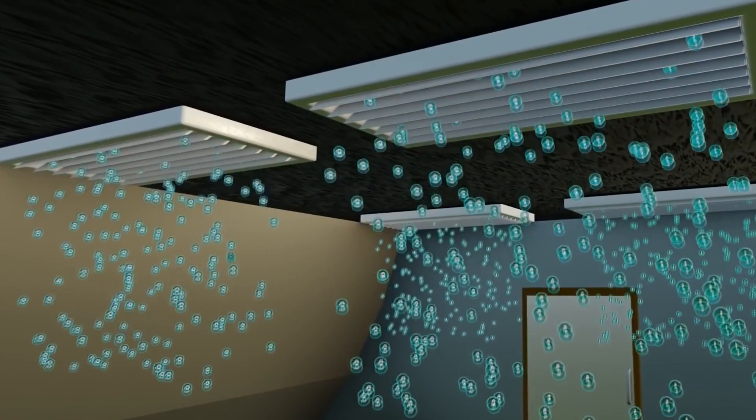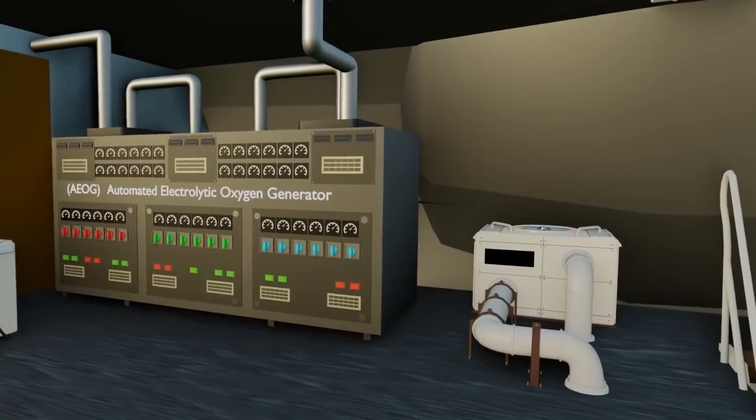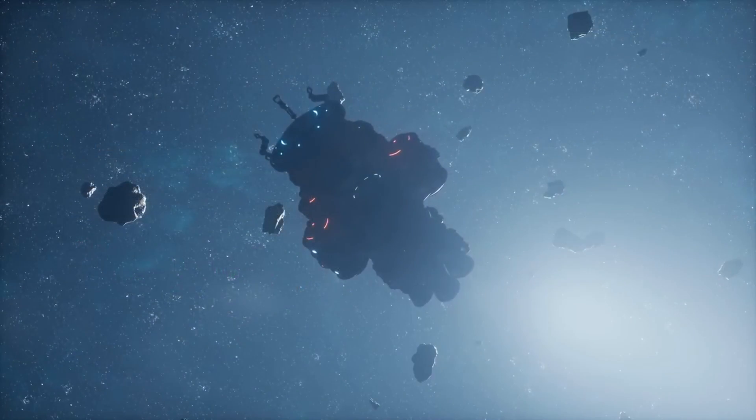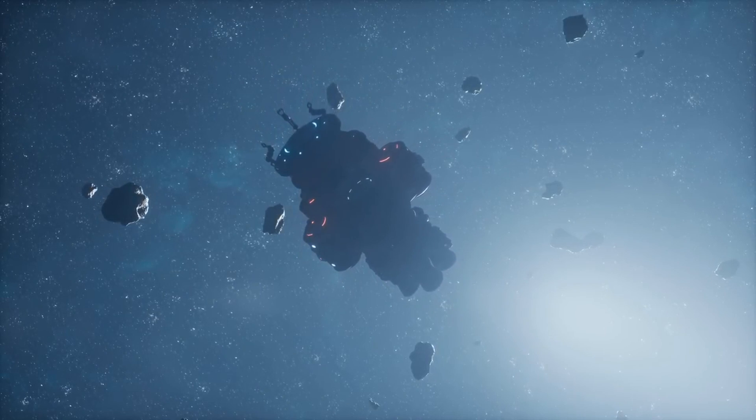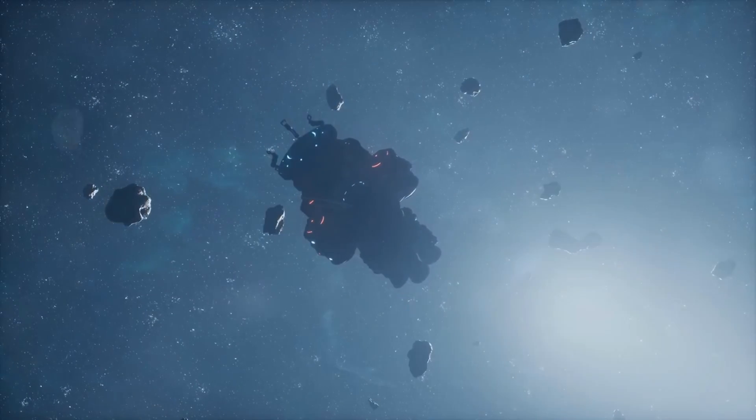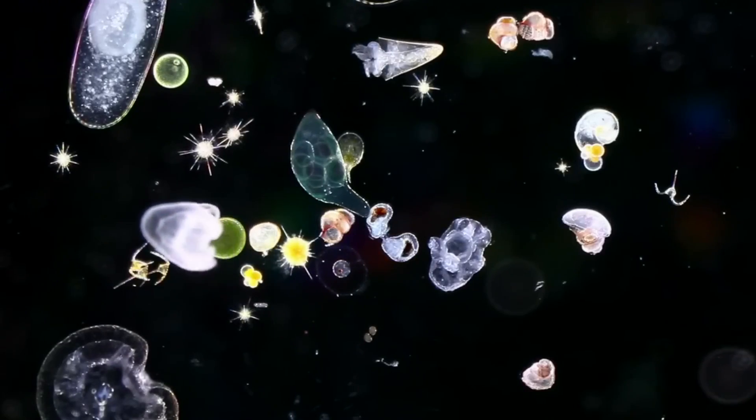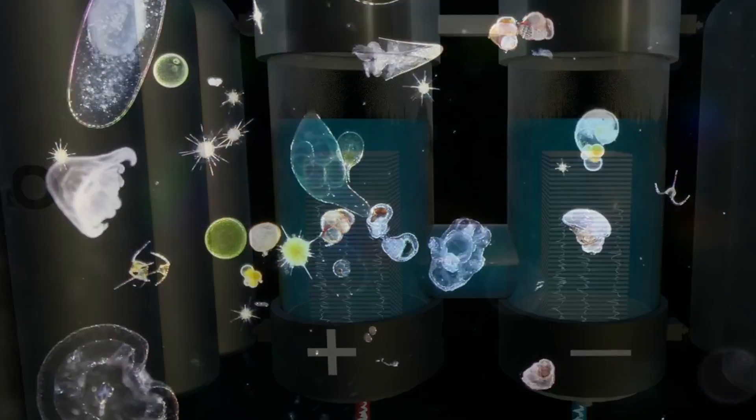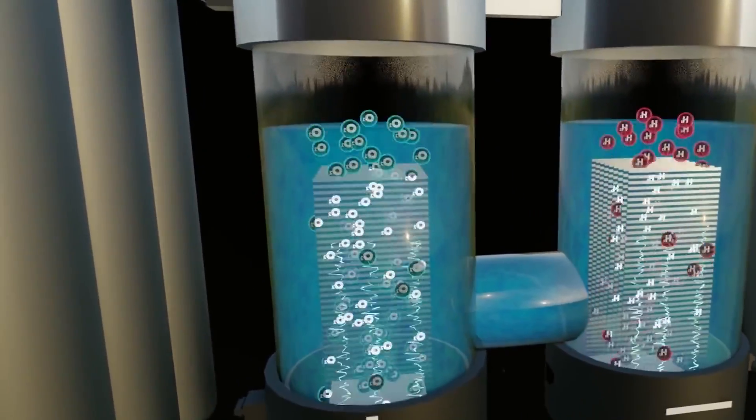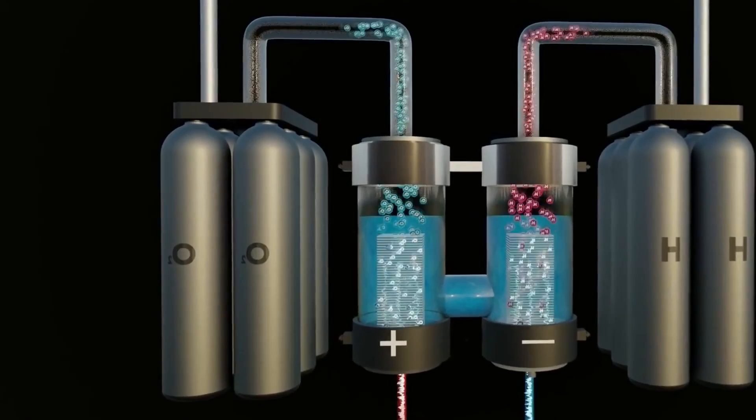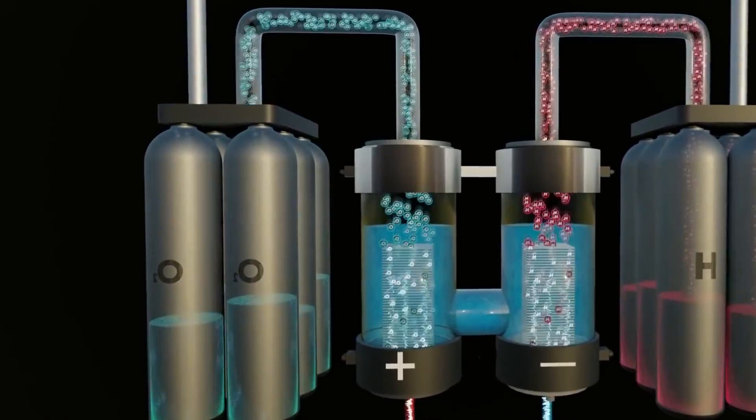Like submarines, spacecraft often use the same electrolysis of water from supplies or waste water to produce oxygen. The water is split into hydrogen and oxygen, which is then released into the spacecraft's atmosphere for breathing. Some spacecraft, such as Apollo, used solid fuel cells to generate electricity and simultaneously produce oxygen as a by-product. In these fuel cells, hydrogen reacts with oxygen to produce electricity and water, and the excess oxygen is released into the cabin air.